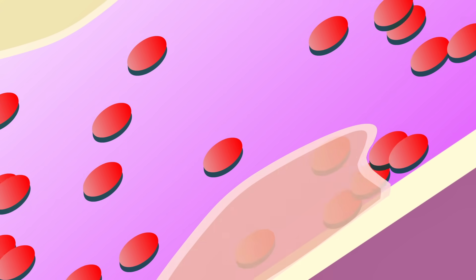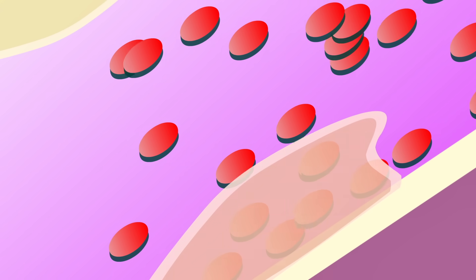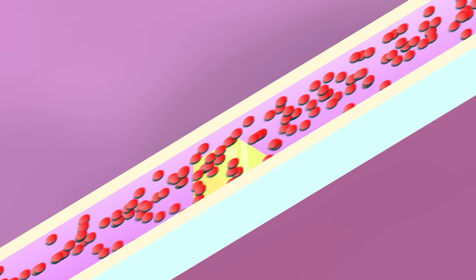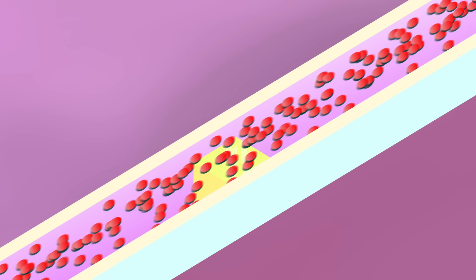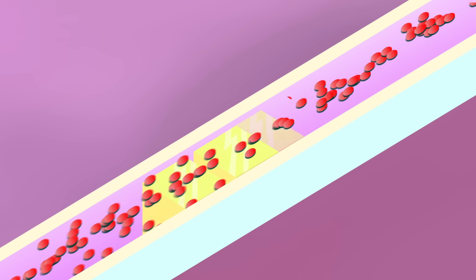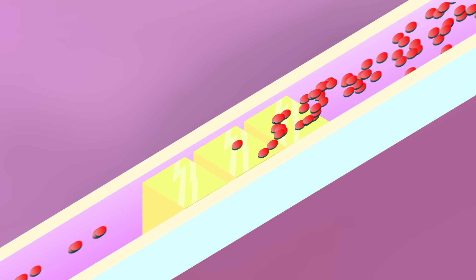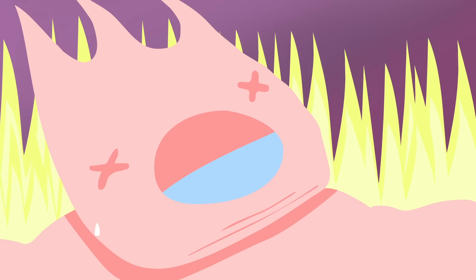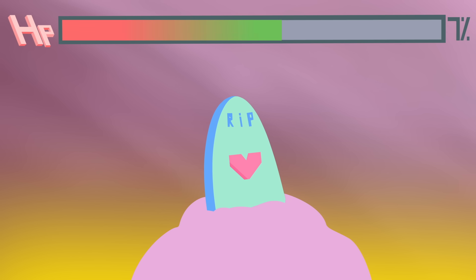Cortisol can also cause the endothelium, or inner lining of blood vessels, to not function normally. Scientists now know that this is an early step in triggering the process of atherosclerosis, or cholesterol plaque buildup in your arteries. Together, these changes increase your chances of a heart attack or stroke.